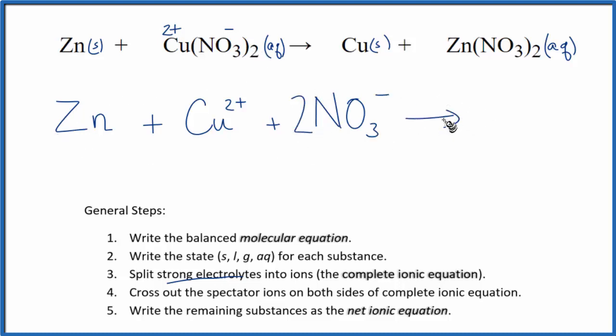These are the reactants. For the products, we have copper, then zinc which is 2+, and nitrate which is 1-. So Zn²⁺ plus NO3⁻, and we have two nitrates here.